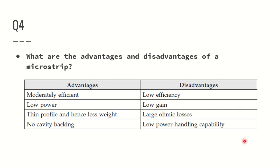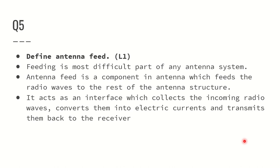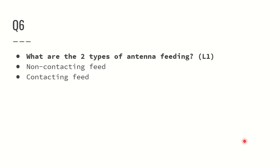The next topic is antenna feed. What do you mean by antenna feed? Feeding is the most difficult part in any antenna system. Antenna feed is a component in an antenna which feeds the radio waves to the rest of the antenna structure. It acts as an interface which collects the incoming radio waves, converts them into electric currents, and transmits them back to the receiver. What are the two types of antenna feed? Non-contacting feed and contacting feed.